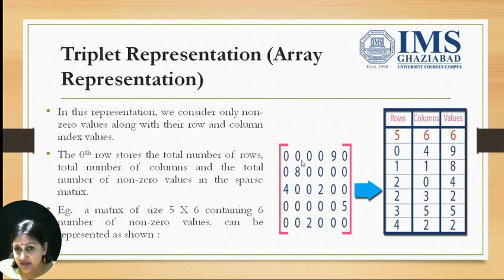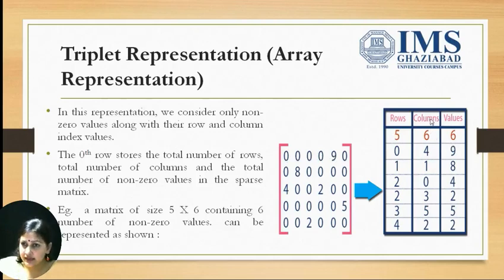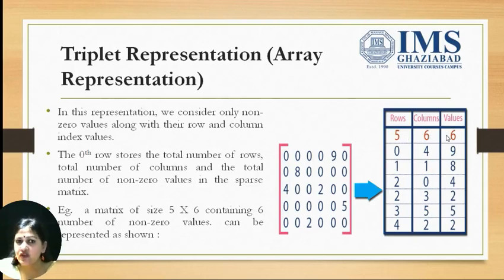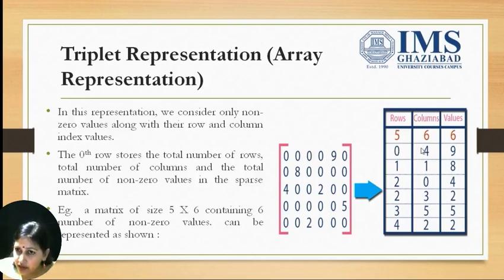For example, in this sparse matrix we have 5 rows, so this value will be 5. We have 6 columns, so the number of columns is 6. And the total number of non-zero values is 6. So the first row contains total number of rows, total number of columns, and total number of non-zero values. From the next row onwards, each row contains the row number, column number, and the non-zero value.